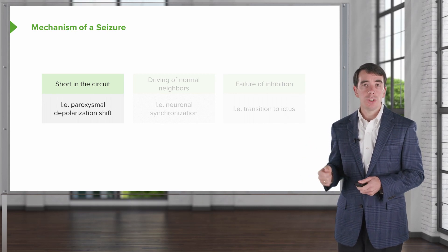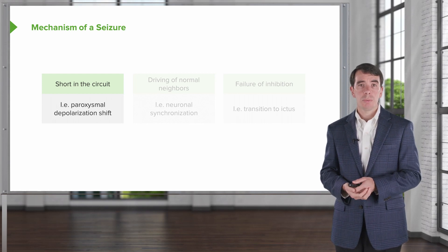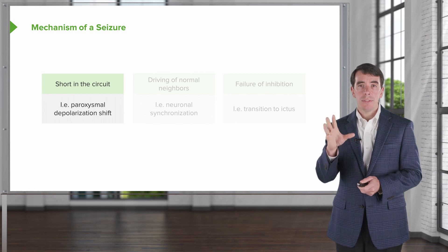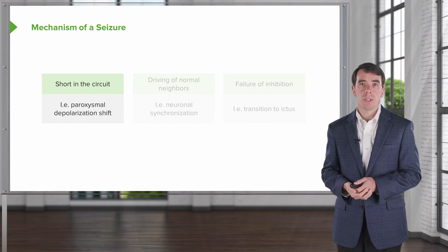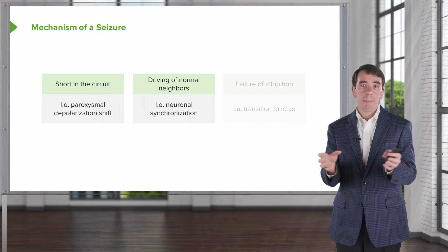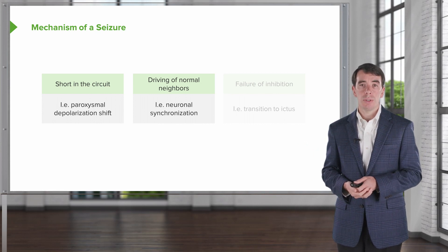The first is you have to have a short in the circuit. And in neurology, we call that a paroxysmal depolarization shift. This is the short that gives rise to that initial seizure nidus and seizure focus. That's followed by driving of normal neighbors — normal neurons have to be co-opted into seizing. And this is called neuronal synchronization.